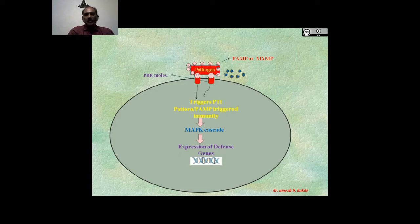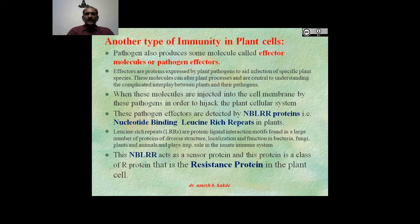Beside PAMP or MAMP molecules, pathogens also have effector molecules. When these are injected into the plasma membrane, the plant shows a different response. There is another type of immunity in the plant cell: pathogens produce small molecules called effector molecules or pathogen-effectors. These effectors are proteins expressed by plant pathogens to aid infection of specific plant species. These molecules can alter plant processes and are central to understanding the complicated interplay between plants and their pathogens.